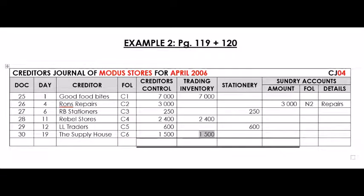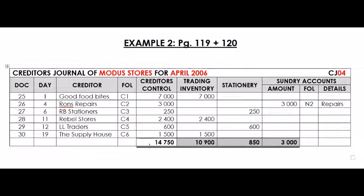Remember to total your columns. Creditors Control has a total of 14,750 Rand. Trading inventory is 10,900 Rand. Stationery is 850 Rand. Sundry accounts is 3,000 Rand. If you add these three columns together you will see that they add up to the total of the Creditors Control column, because every value went to Creditors Control and to one of these columns.